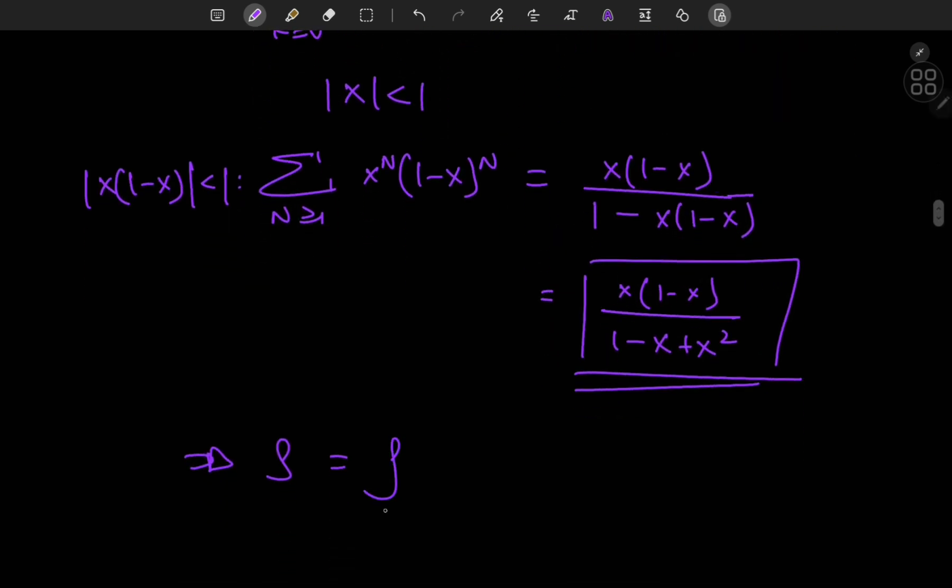So this implies that the sum S equals the integral from 0 to 1 of 1 by x times 1 minus x, and this sum is being multiplied by it. So we have x times 1 minus x divided by 1 minus x plus x squared, integration with respect to x.